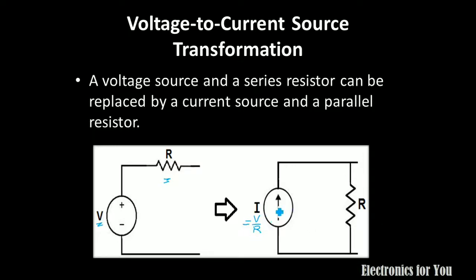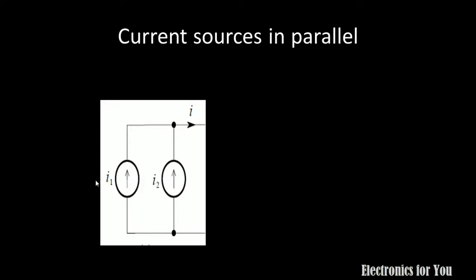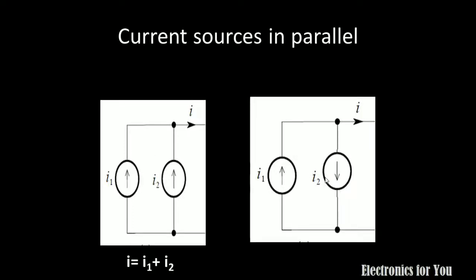To that current source, this resistance is in parallel. What will happen if current sources are connected in parallel? For example, if two current sources are connected — the first one providing current I1 and the second providing current I2 — and both currents are in the same direction, then at the node these two currents get added. Therefore the resultant current will be equal to I1 plus I2.